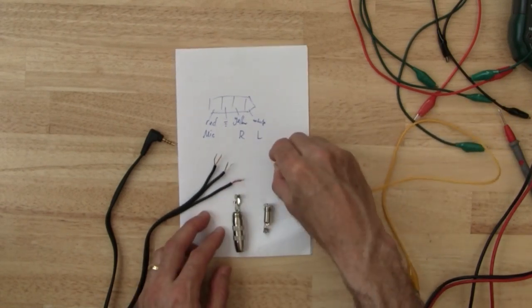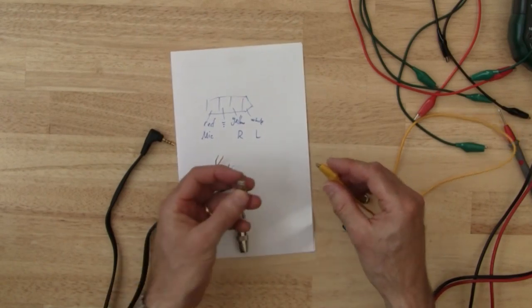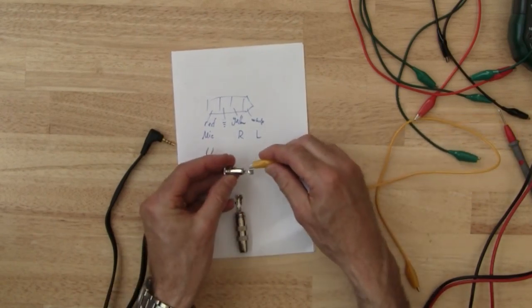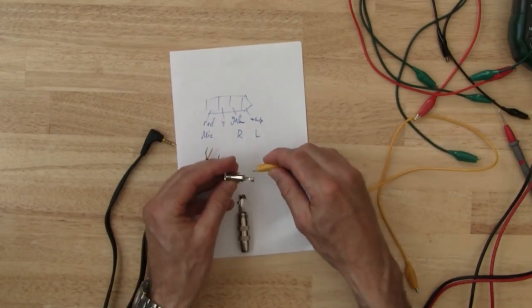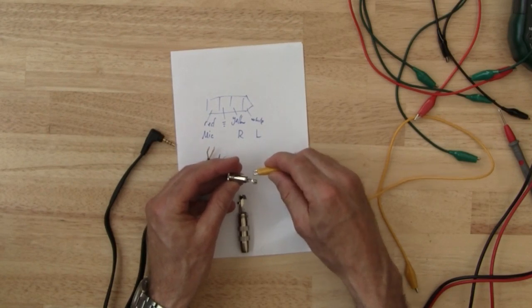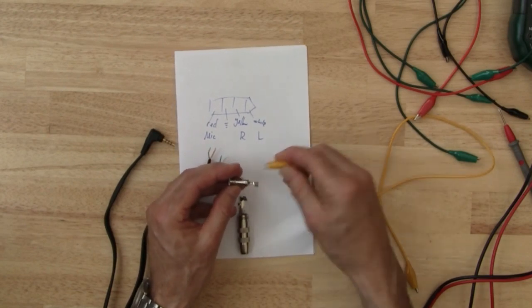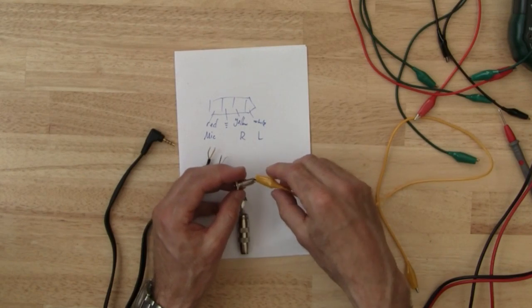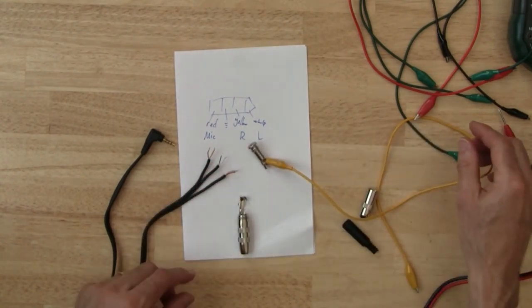So starting with yellow - that's the right signal. Make sure the plastic cover of the alligator lead is pushed down really far because it's really tight space to work in here and you don't want the metal parts of the alligator clips to be touching each other. So I'm going to go ahead and put yellow on one side of the headphones. I'm not really paying too much attention yet to which is left and which is right.